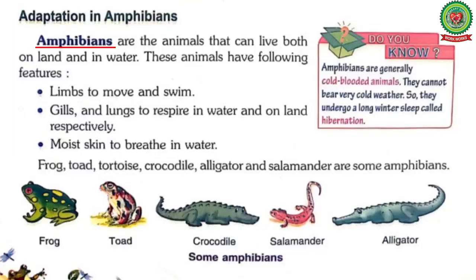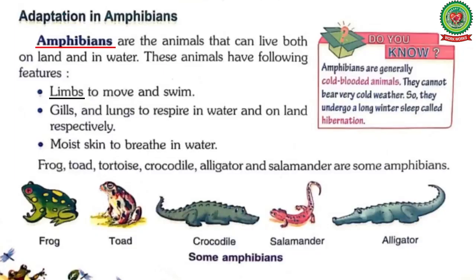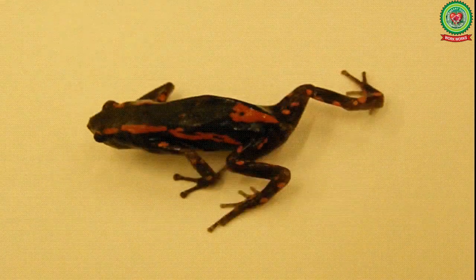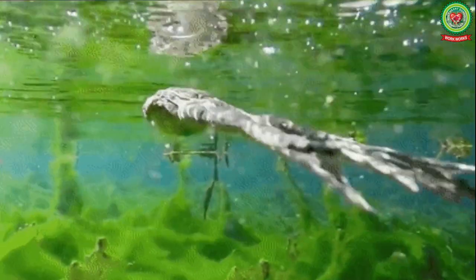These animals have the following features. The question arises: which features help amphibians to live both on land and in water? The answer is limbs to move and swim. Underline 'limbs' — its meaning is arms and legs of animals. On land, animals like frogs move with the help of limbs, but in water they swim.